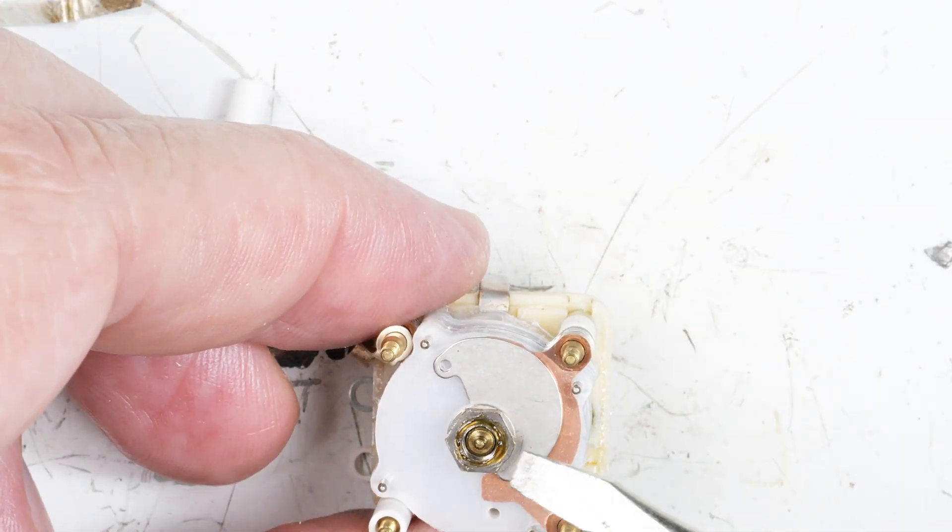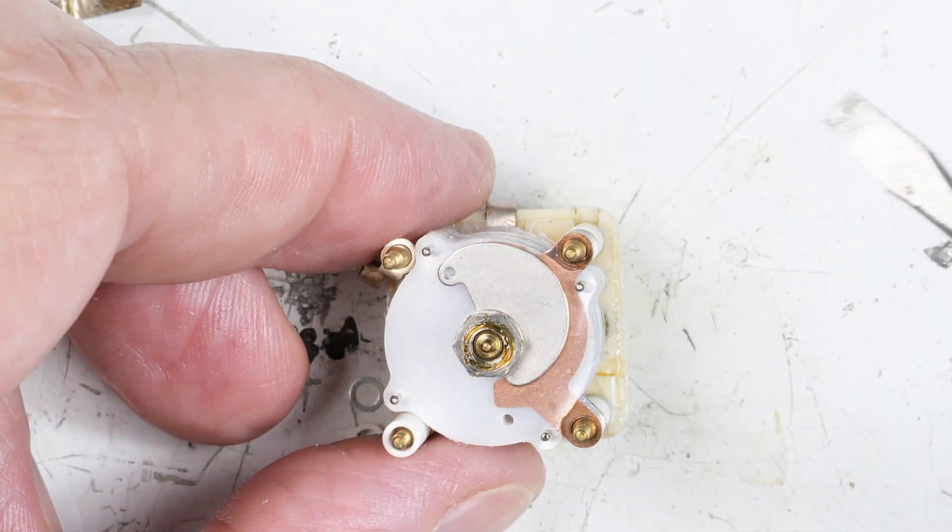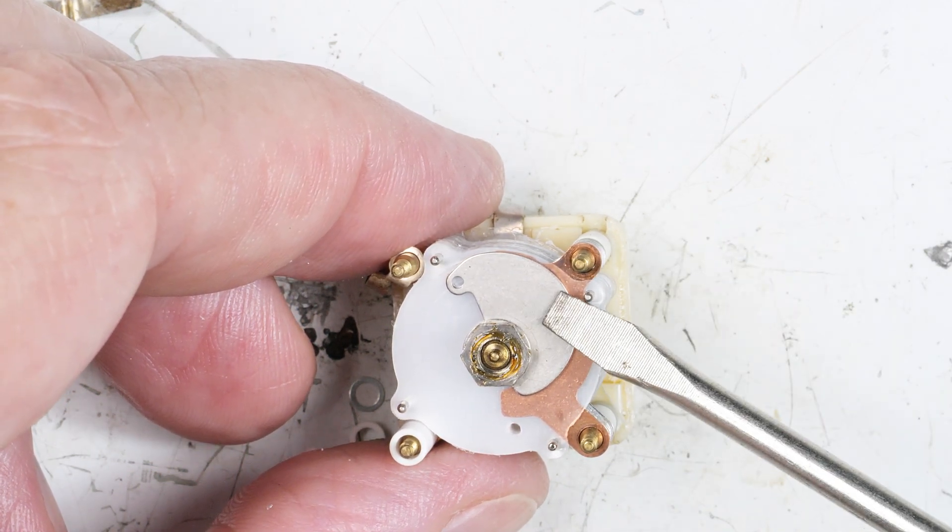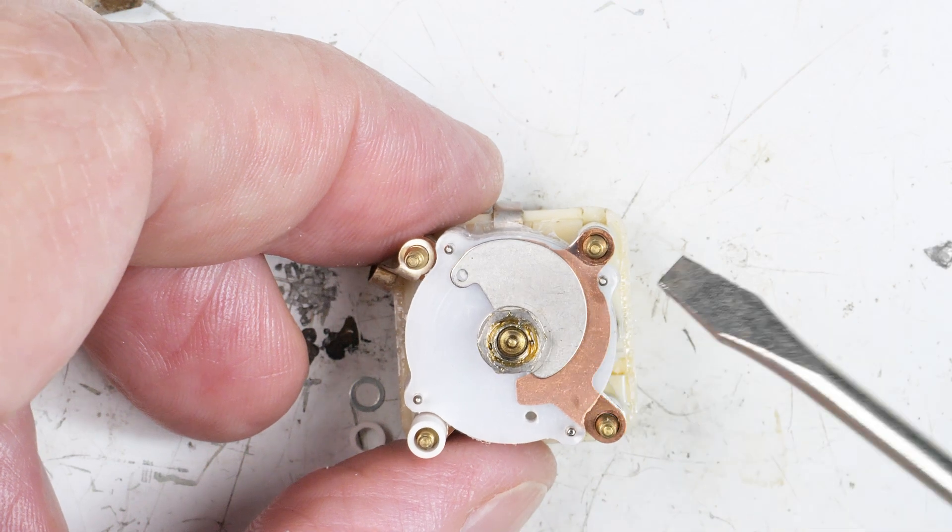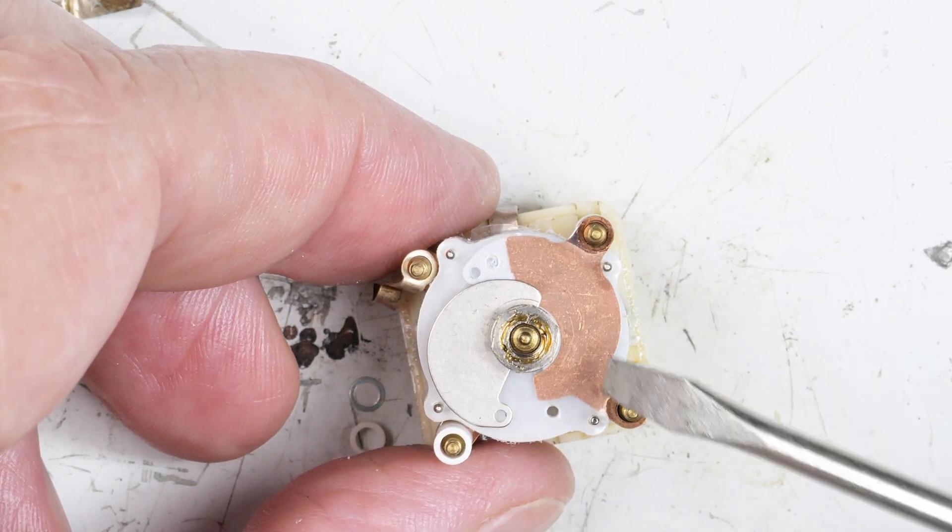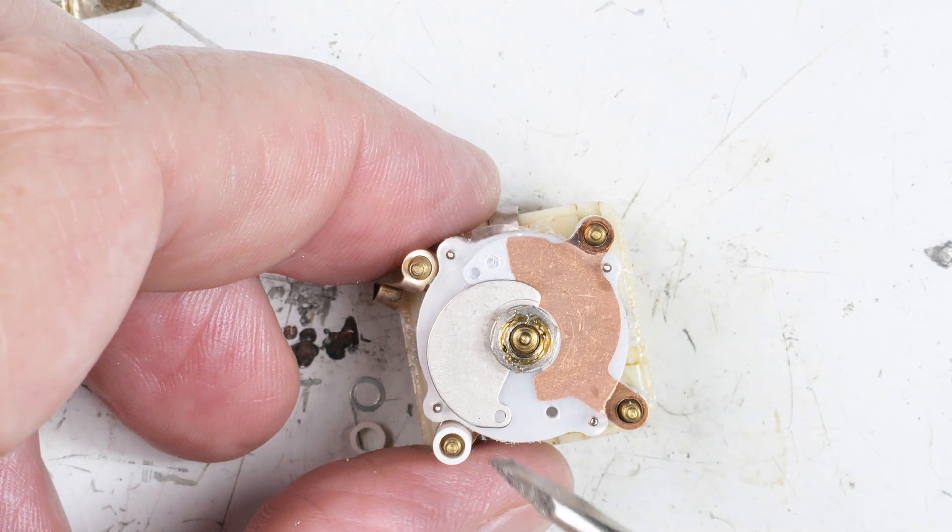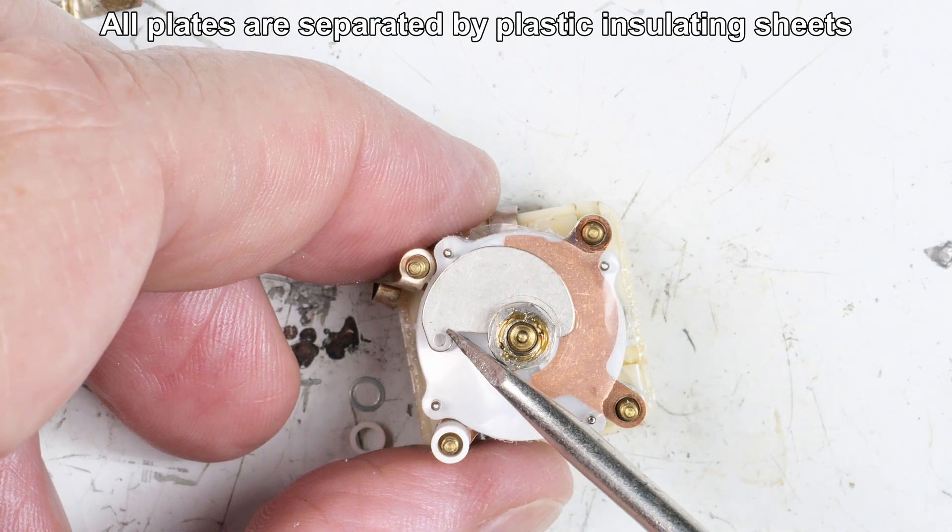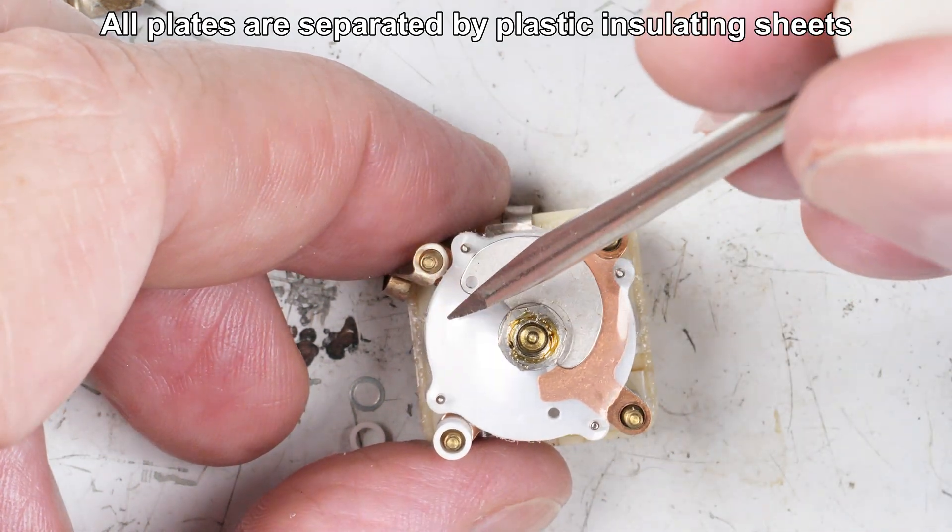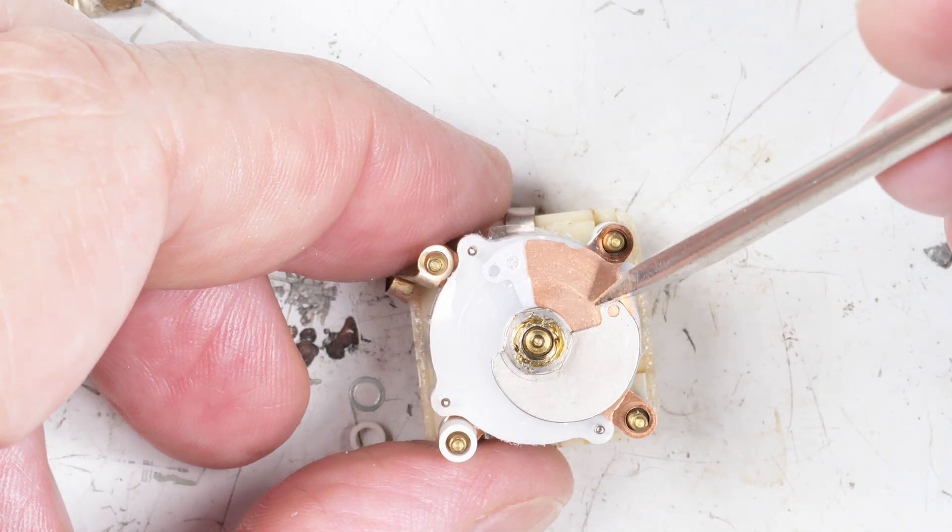And here are the plates. You can see there are two sets of plates. One of them is attached to this side, and one of them is attached to the center. And you can also see that as this plate moves around, it covers and uncovers this. So the two of them overlap, and the more they overlap, the more the capacitance goes up.